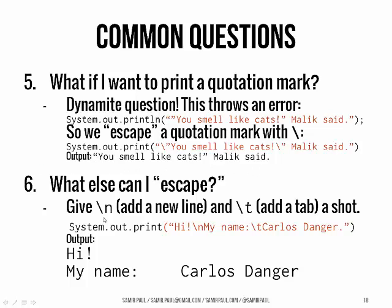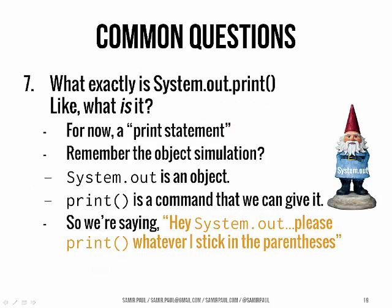What else can you escape? You can escape \n — that gives you a new line — and you can escape \t — that gives you a tab. For example, you can get 'Hi' then insert a new line without using println, then 'Hi, on a new line my name,' and then a tab, then 'Carlos Danger.' What exactly is System.out.println? For now, just think of it as a print statement. But if you think back to object-oriented concepts, System.out is really an object and print is a command we can give it — we're saying to System.out: go ahead and print whatever I stick in these parentheses.